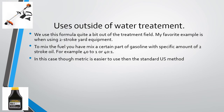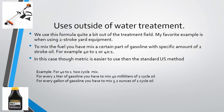This formula can also be used outside the water treatment field. A favorite example is standard two-stroke yard equipment. To mix the fuel, you mix a certain amount of gasoline with a certain amount of two-stroke oil — in this case, 40 to 1. In metric, for every liter of gasoline you mix 40 milliliters of two-cycle oil. In standard, for every gallon of gasoline you mix 3.2 ounces of two-cycle oil. The metric system is slightly more intuitive than the standard system.